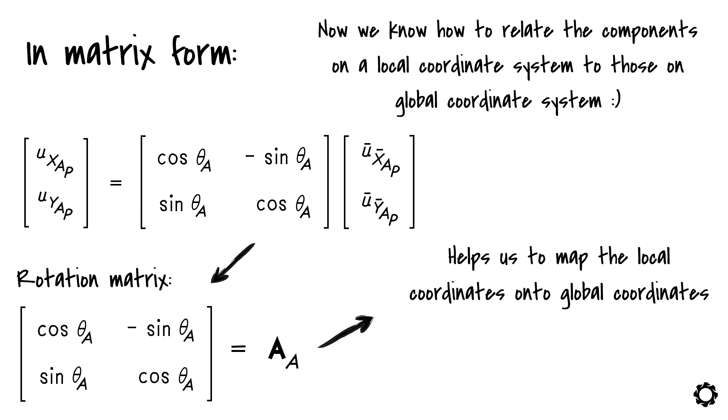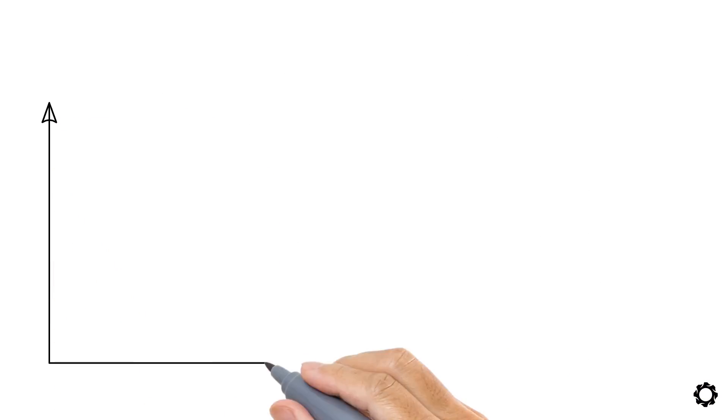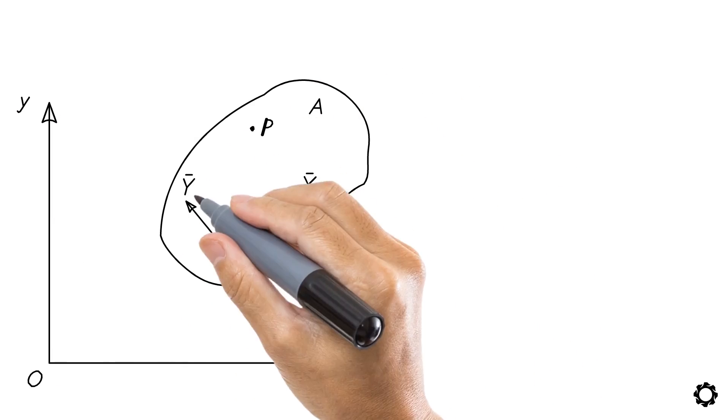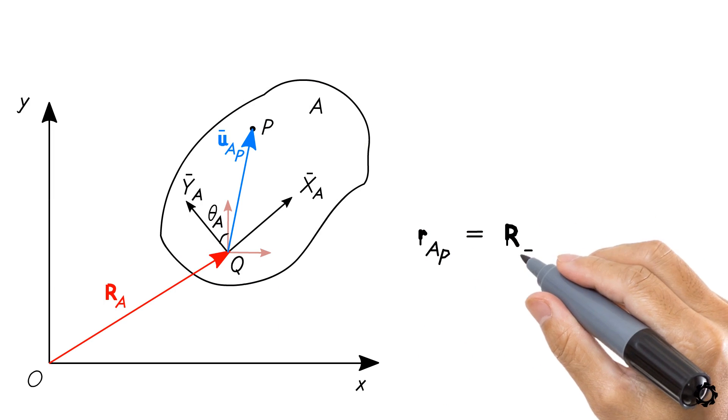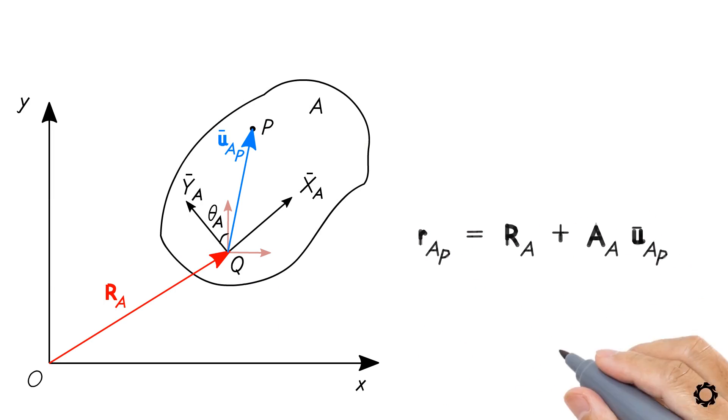Now in more compact form, u_ap equals A_a·u̅_ap. We have the position vector of a point located on a body represented completely in the global coordinate system: r_ap equals r_a plus A_a·u̅_ap.